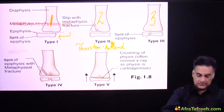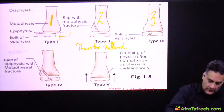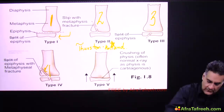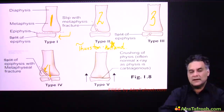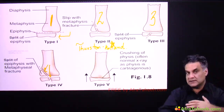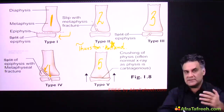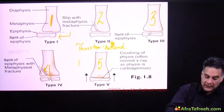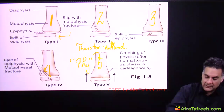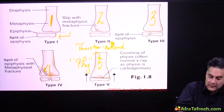Salter Harris type 4 is a split of the epiphysis along with the metaphysis, and type 5 is a vertical crushing injury where the growth plate gets damaged.